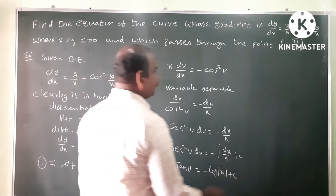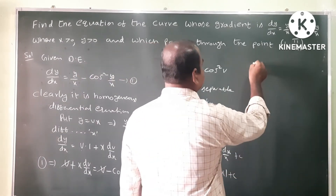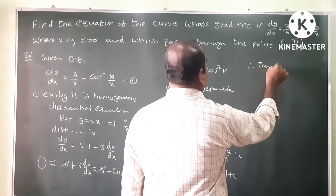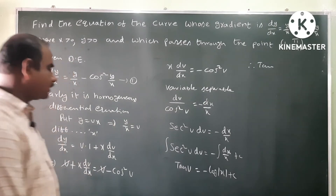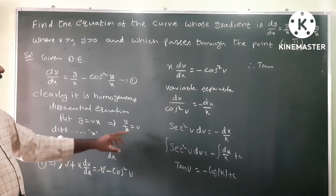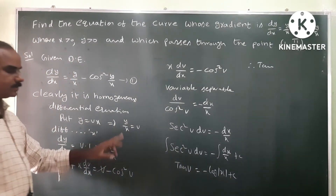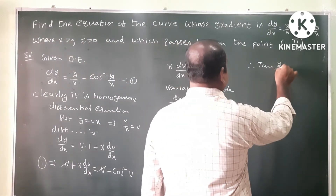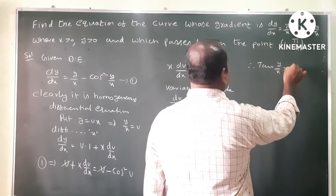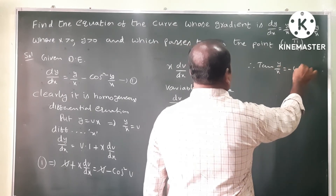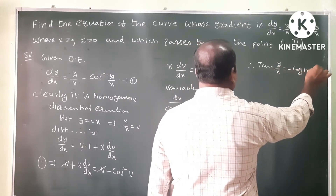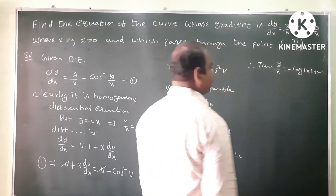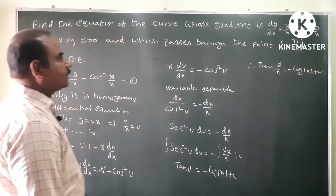This is the solution. Now substitute back the value of v: since v equals y by x, we get tan(y/x) equals minus log mod x plus c. This is the general solution.